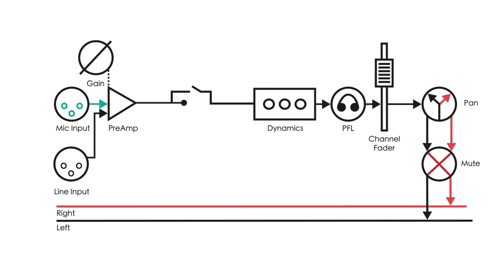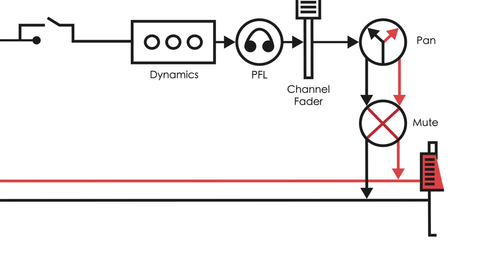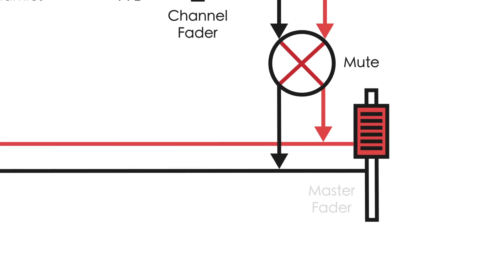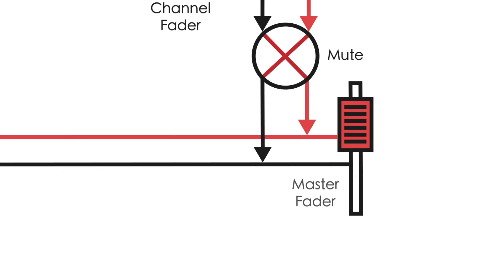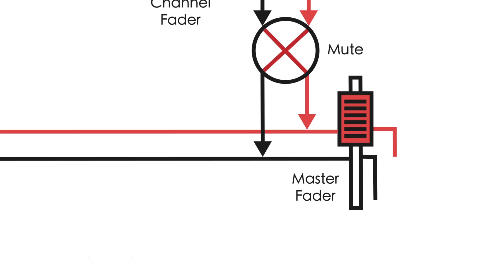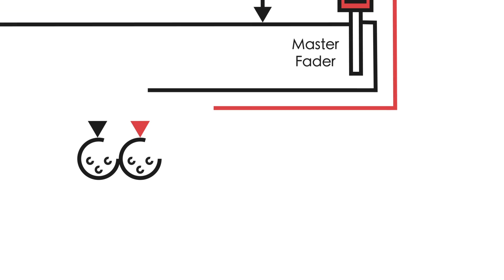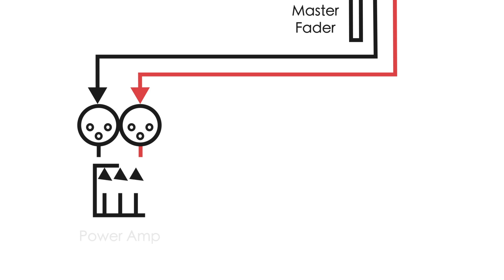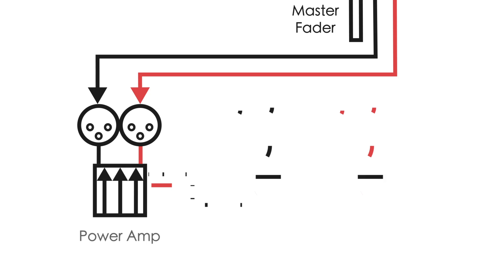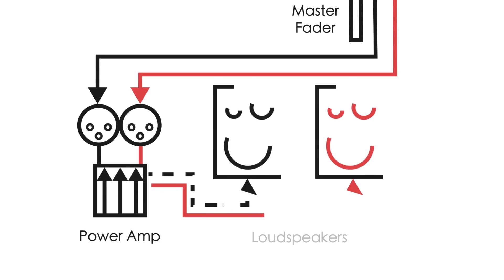After all the channels have been mixed, the level of the left and right bus is controlled by the master fader before the signal is outputted from the console. Once the signal from the left and right bus has passed through the master fader, it is then sent to the main outputs of the console to be sent to the speaker system.